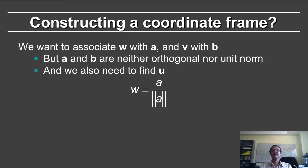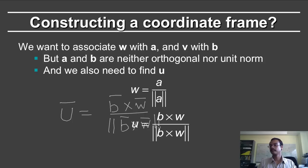So instead of finding the vector v, we first find the vector u. We write the vector u as equal to b cross product with w, and divide the whole thing by the norm of b cross w. And that's the formula I've written here. u is equal to b cross w divided by the norm of b cross w.